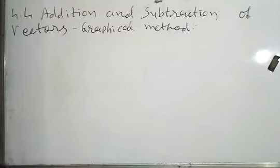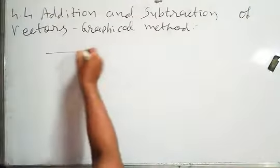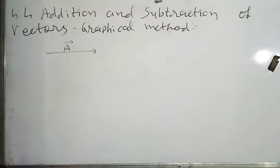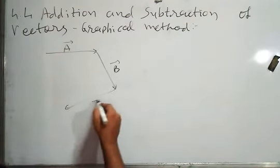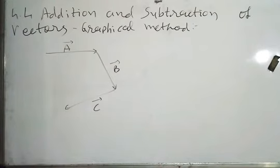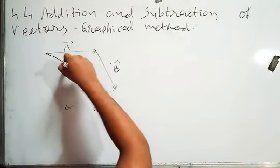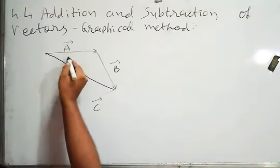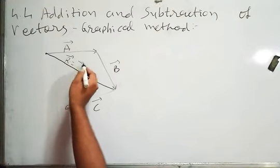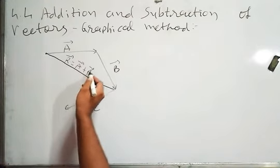Now we are talking about the addition of three vectors. Earlier we discussed the addition of two vectors. So for three vectors: if vector A is in the right-hand side direction, vector B is in this direction, and vector C is in this direction, to find the resultant of all three vectors, I draw a line from A's tail to B's head. That gives the resultant of A and B, which is vector A plus vector B.